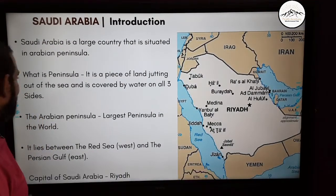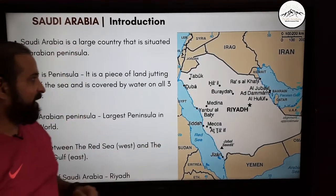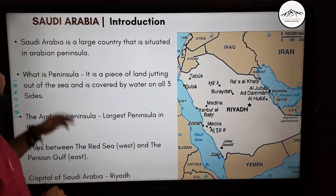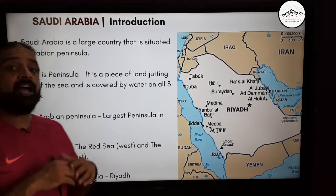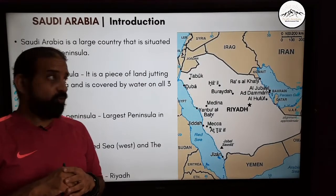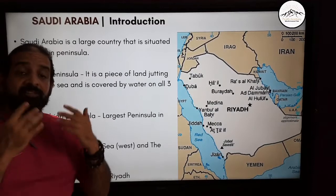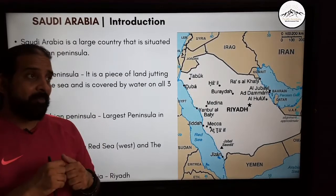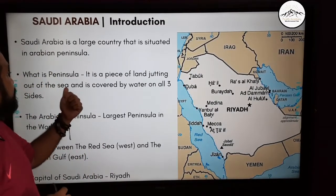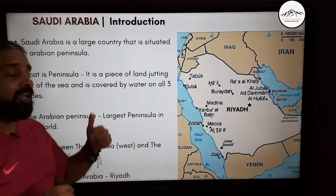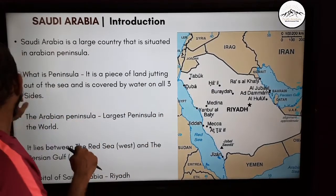This is the map of Saudi Arabia. It is the largest country situated in the Arabian Peninsula. A peninsula is a land which juts out of the sea and is covered by water on three sides.